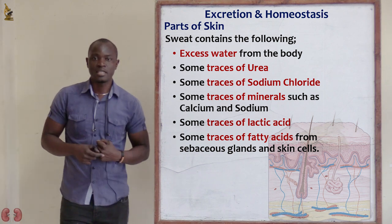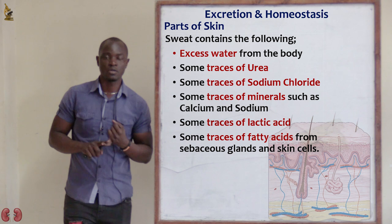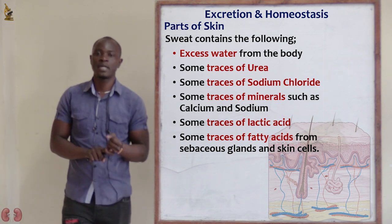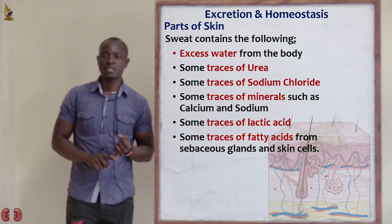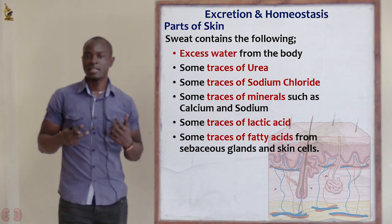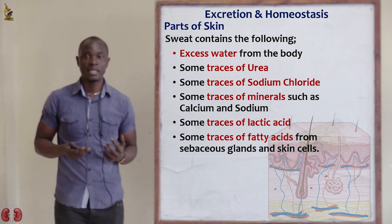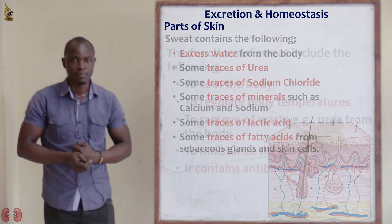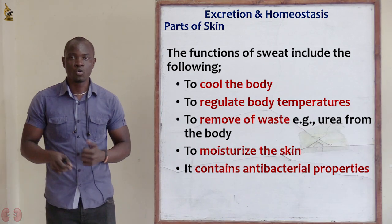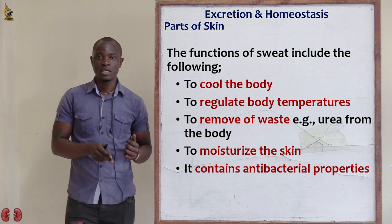Sweat contains different mineral salts such as sodium chloride, traces of urea, and traces of lactic acid. These are the different components found embedded in the sweat. The main function of sweat is to cool the body.